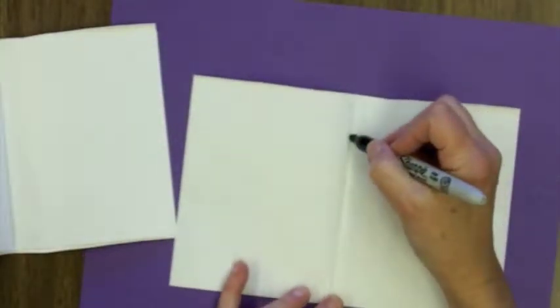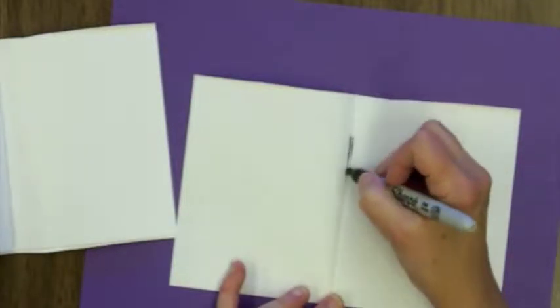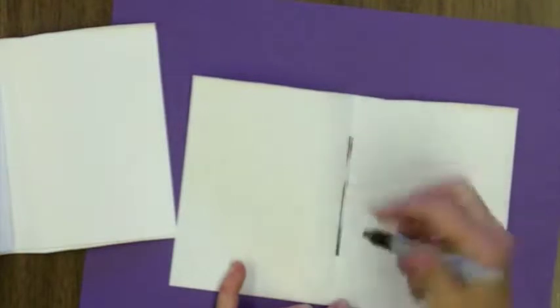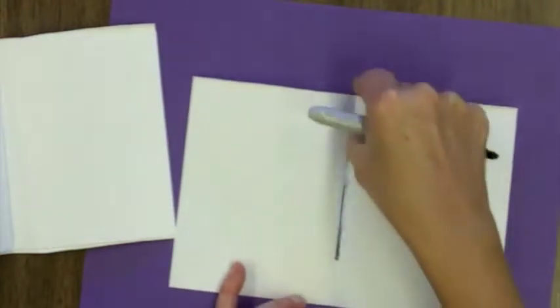Now take one of them, and right down the crease, draw a line, but make it so that there is an inch left of space at each side, or at least approximately an inch, almost an inch.